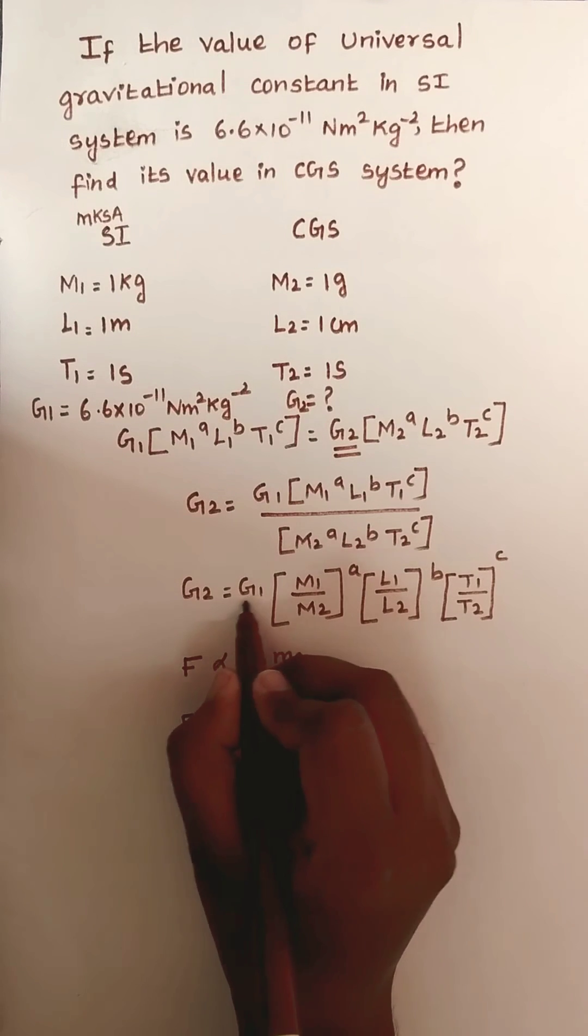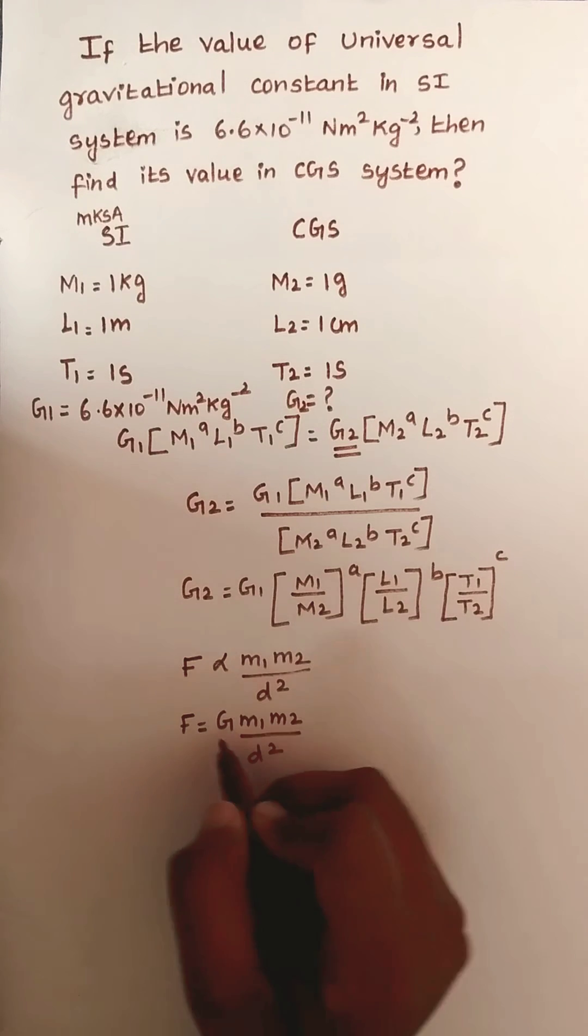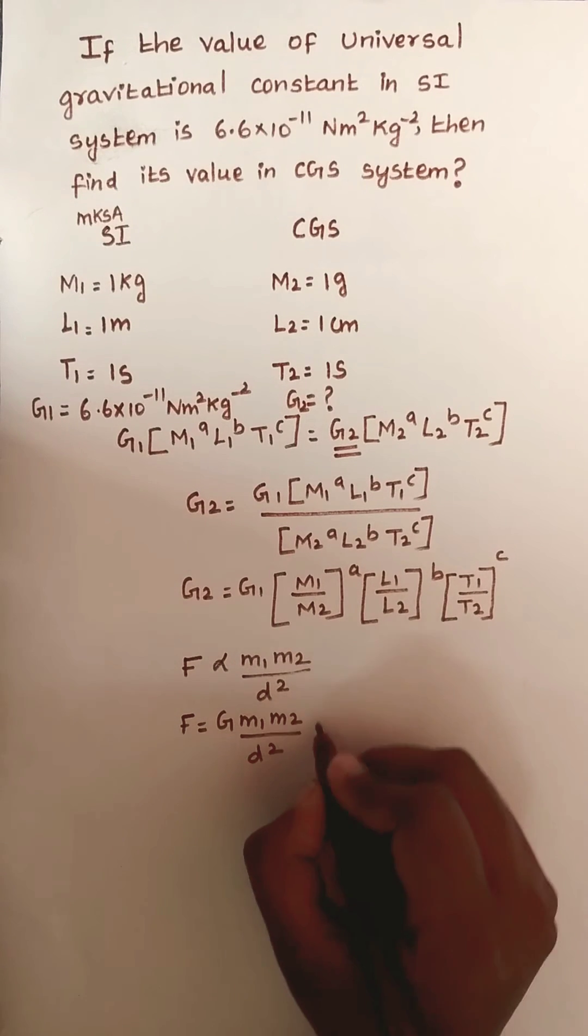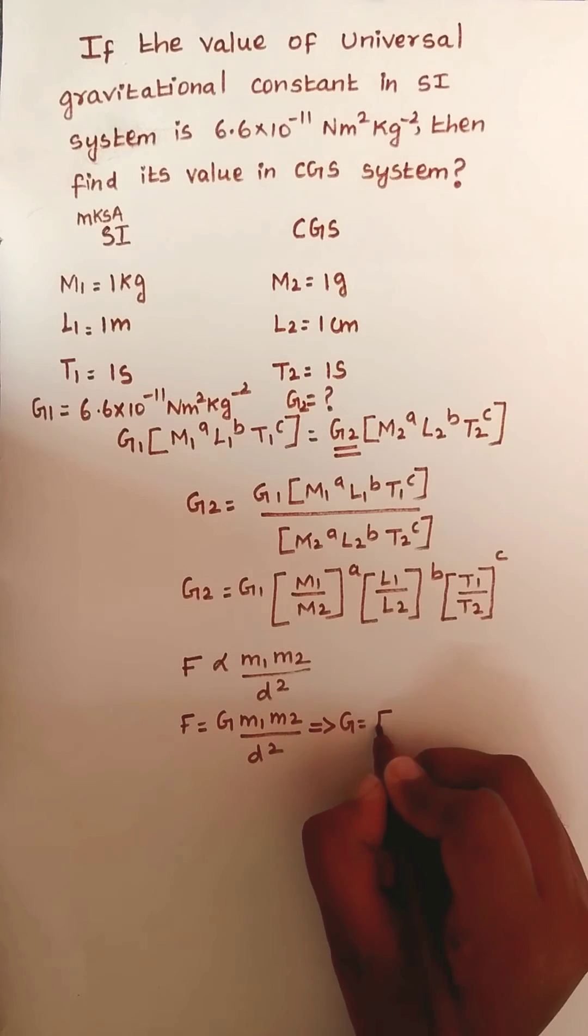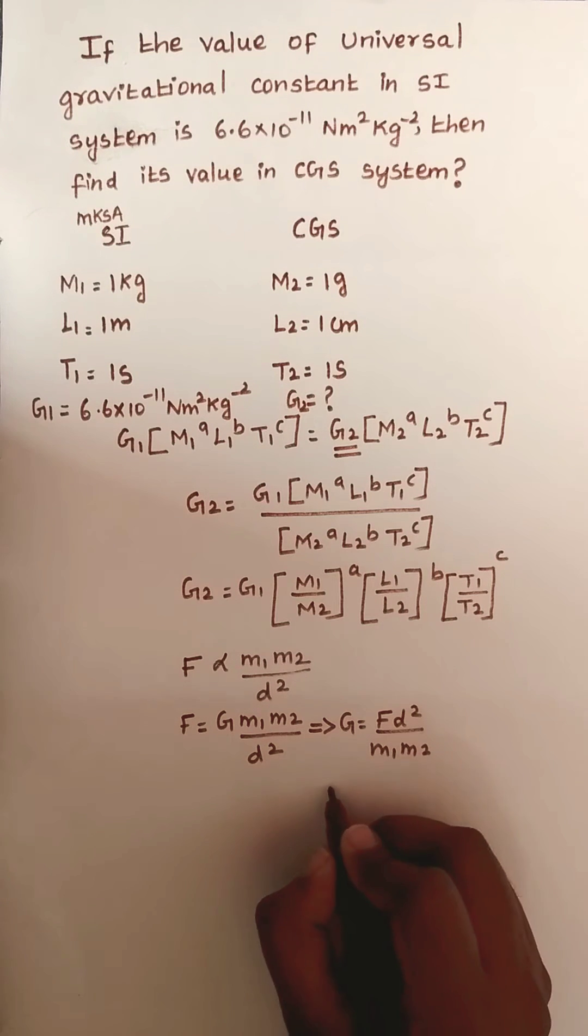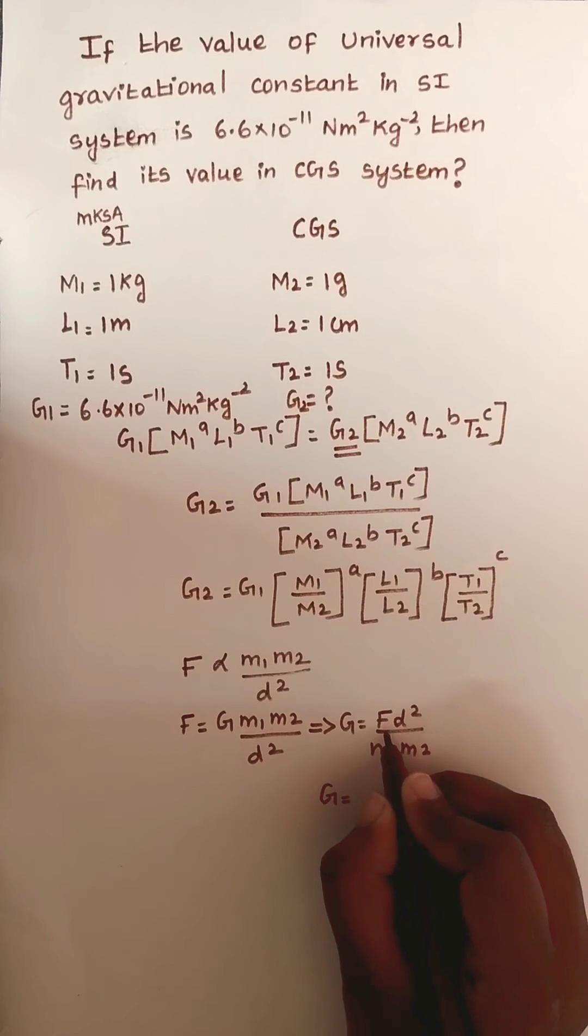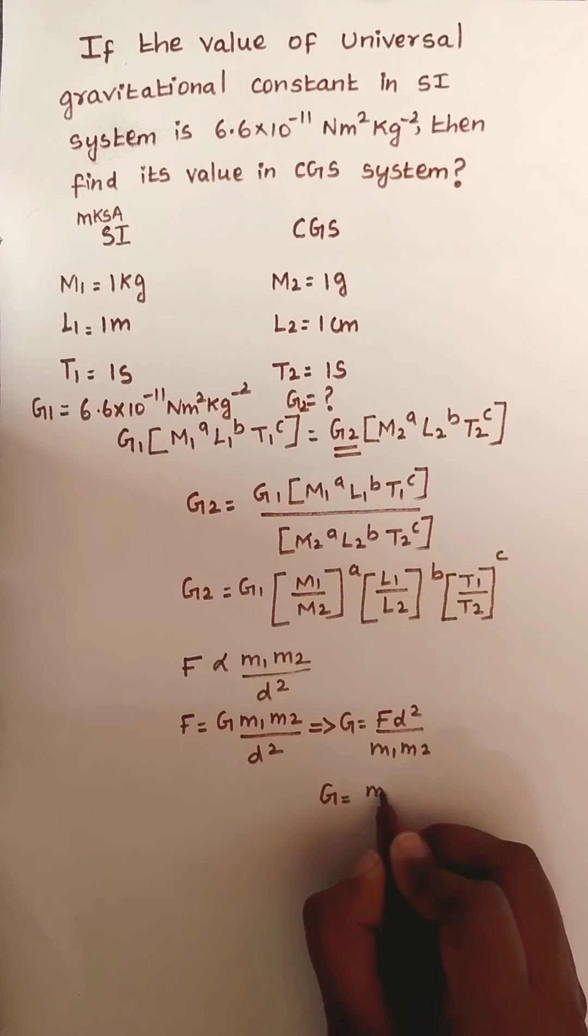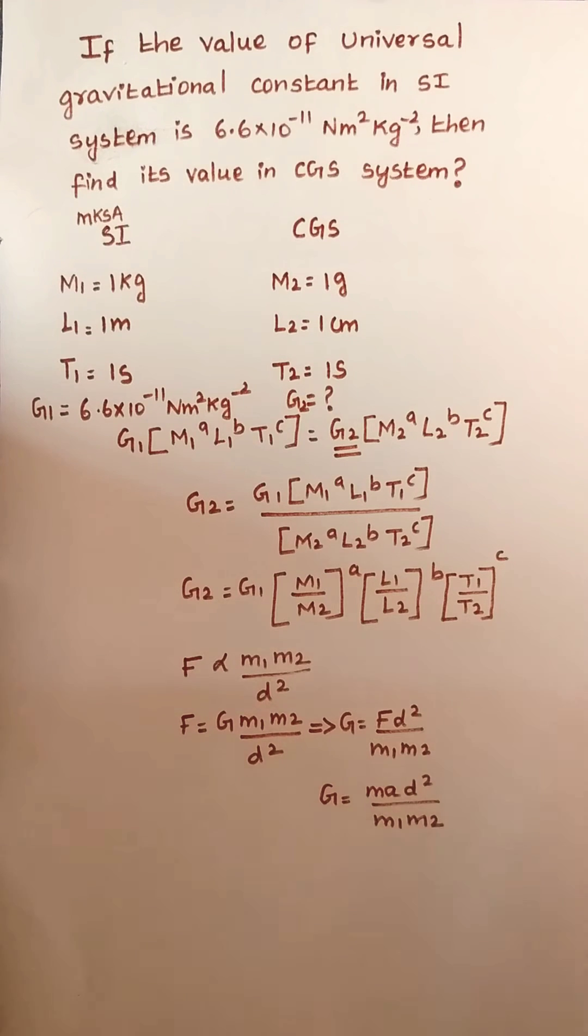I am going to find out gravitational constant dimensional formula using this equation. Rearrange: G = F·d²/(M₁·M₂). Force formula is mass times acceleration, so G = m·a·d²/(M₁·M₂).